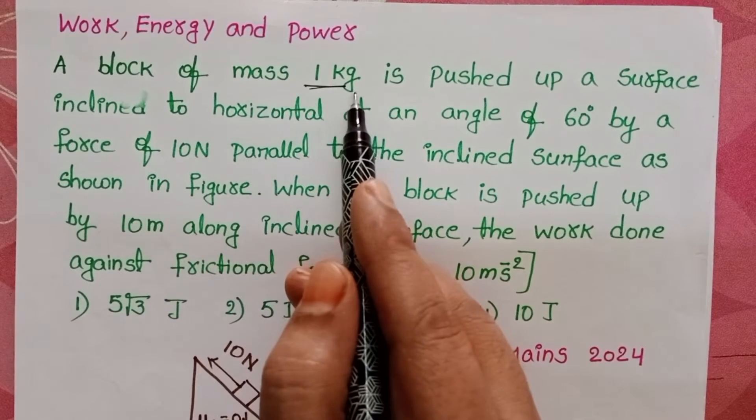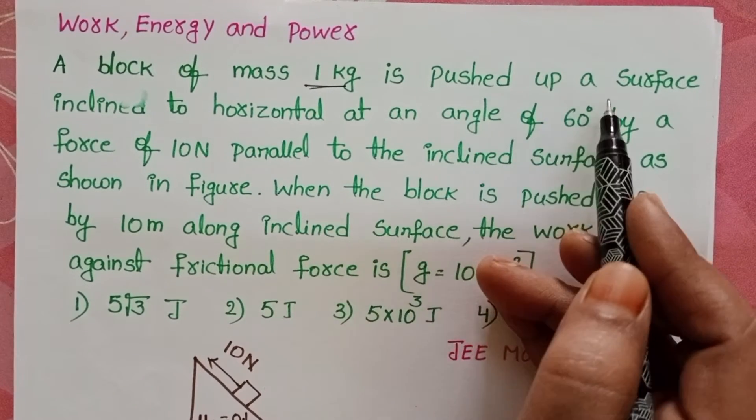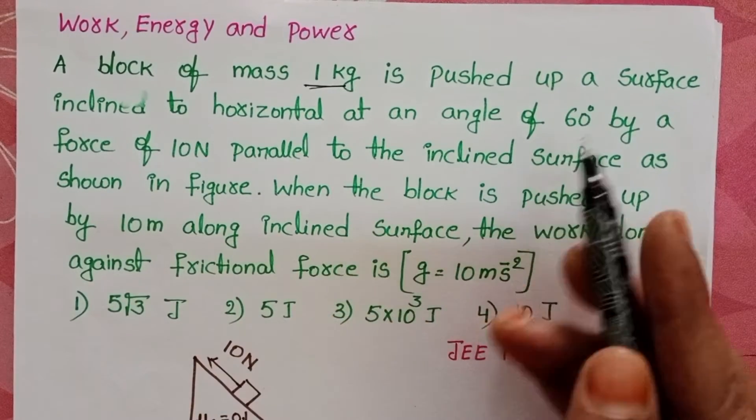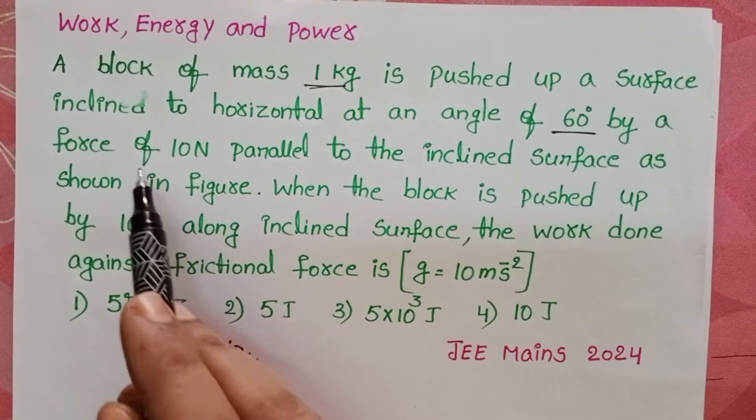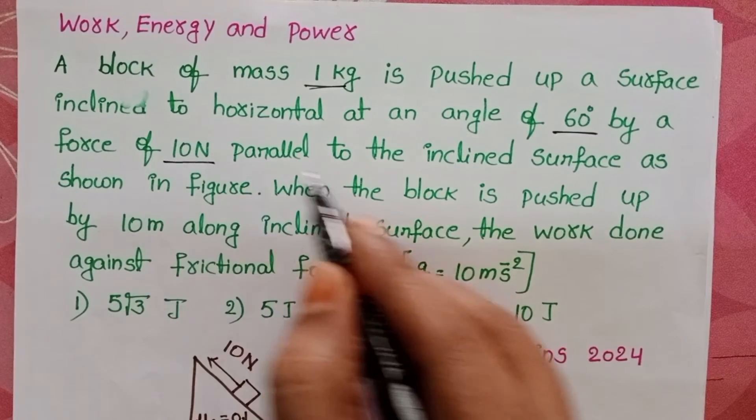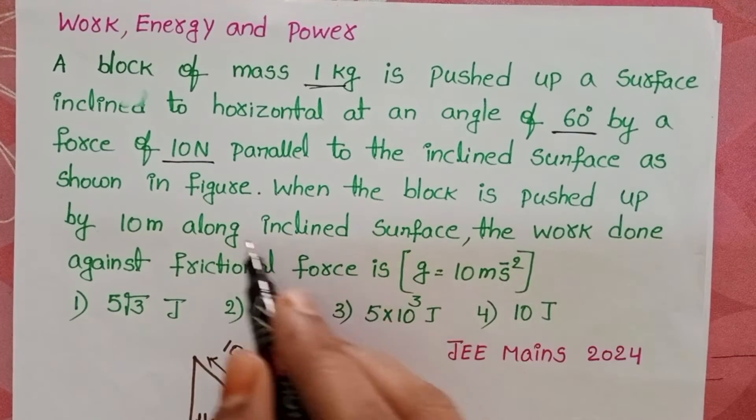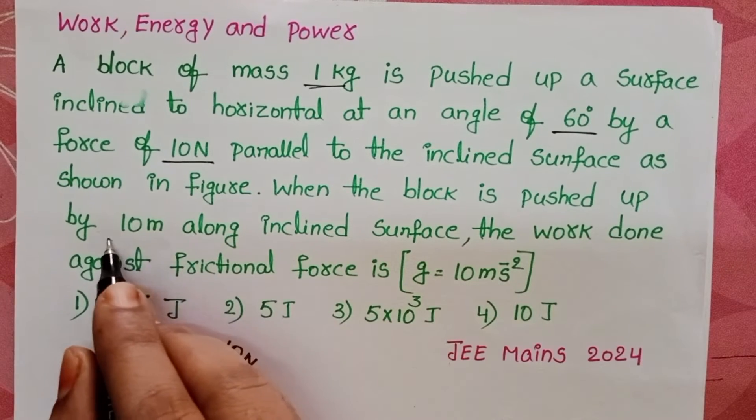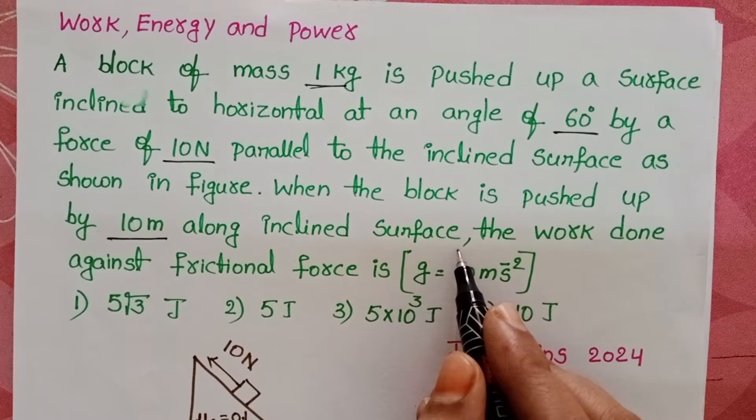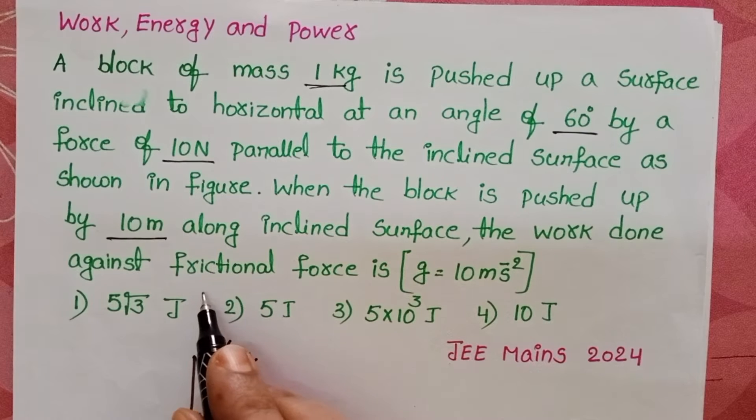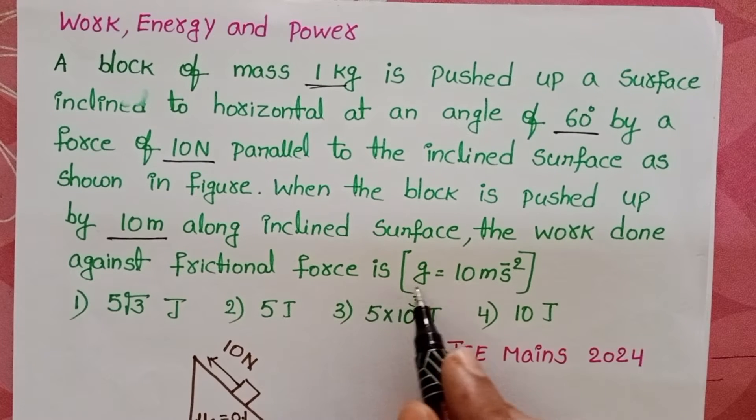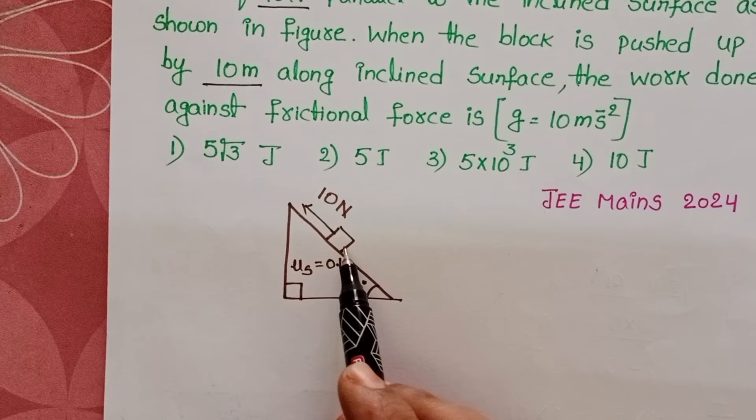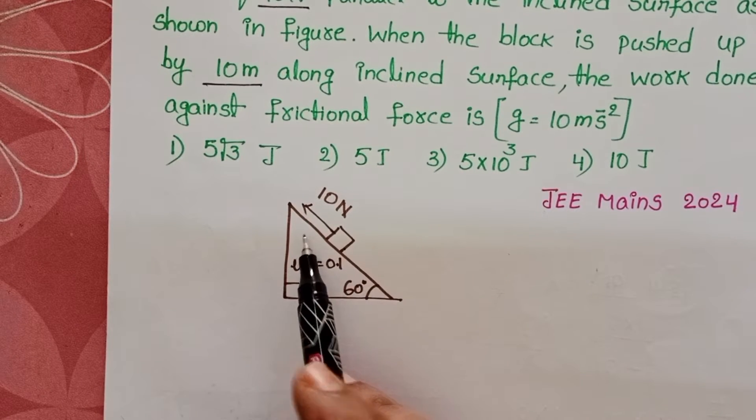A block of mass 1 kg is pushed up a surface inclined to horizontal at an angle of 60 degrees by a force of 10 N parallel to the inclined surface as shown in the figure. When the block is pushed up by 10 meters along the inclined surface, the work done against the frictional force is given. G value is 10 m/s². This block is placed on the inclined plane.